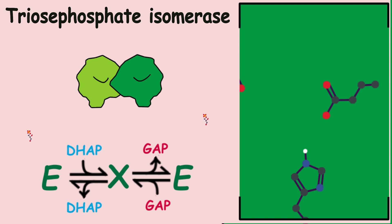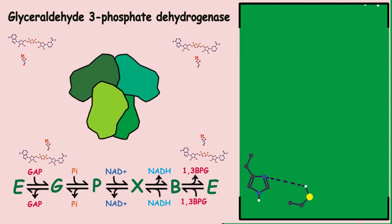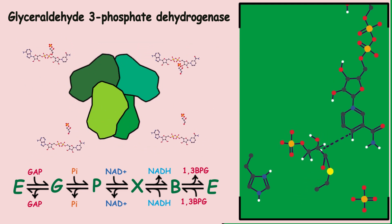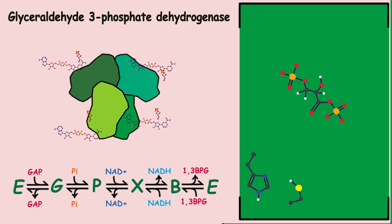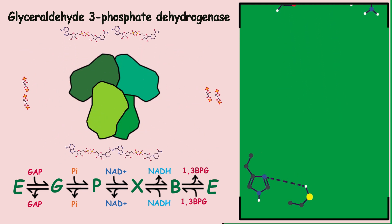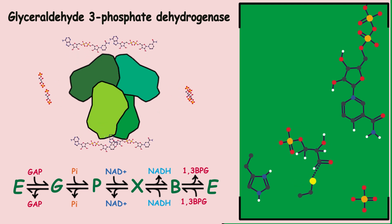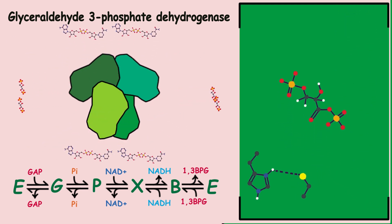This reaction is also reversible. The next protein is glyceraldehyde-3-phosphate dehydrogenase; four of them bind to form a tetramer. After this stage, energy begins to be extracted from the molecules. The enzyme adds a phosphate to glyceraldehyde-3-phosphate to convert it to 1,3-bisphosphoglycerate, and at the same time an NAD molecule accepts two electrons to become NADH in its reduced form.